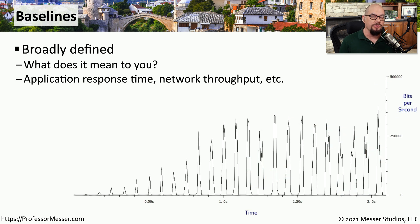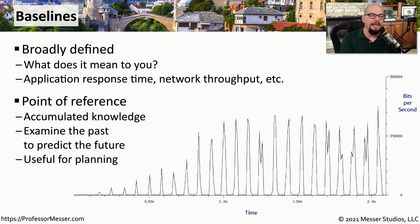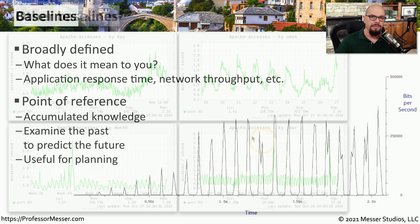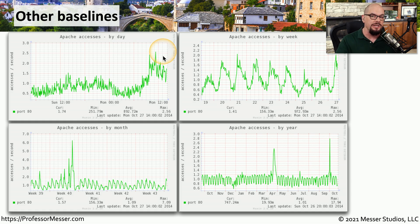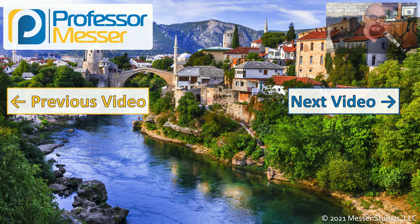Some organizations might also create a series of baselines that can help them understand how things might change over time. These baselines could be related to network throughput, or they may be related to application response time. This allows you to understand exactly how performance has been in the past, get an understanding of what's happening with performance today, and that might help you understand what you could predict for the future. This may allow you to see certain trend lines, where you can see traffic that is increasing or decreasing, or you may be able to see a sharp increase in access, and that may cause you to make decisions about what you should do next to keep the network up and running.